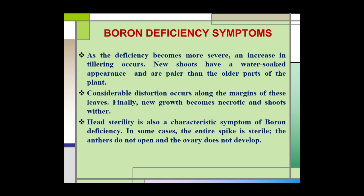As the deficiency of boron becomes more severe, an increase in tillering occurs — tillering meaning the development of side shoots. New shoots have a water-soaked appearance and are paler than the older parts of the plant. Considerable distortion occurs along the margins of the leaves. Finally, new growth becomes necrotic and shoots wither.